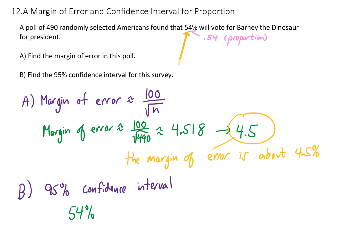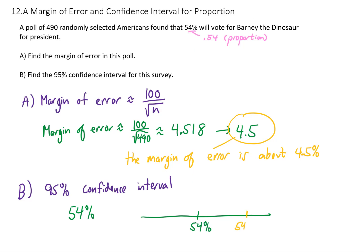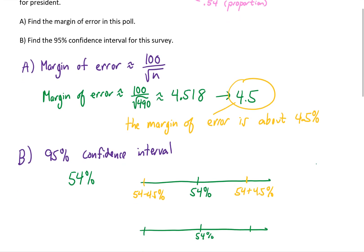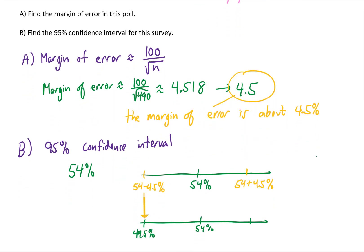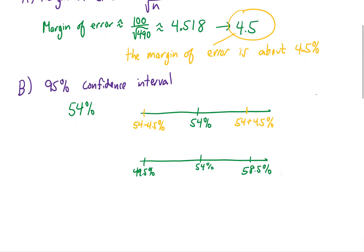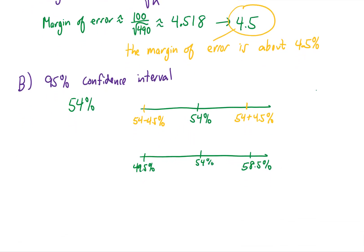So 54% is going to be the center of our confidence interval. If we draw a number line with 54% in the middle, we add 4.5% on one side and subtract 4.5% on the other, giving us an interval from 49.5% to 58.5%. We can say we're 95% confident that somewhere between 49.5% and 58.5% of Americans are going to vote for Barney the Dinosaur.